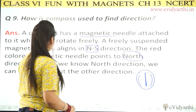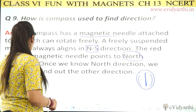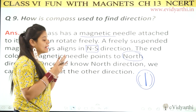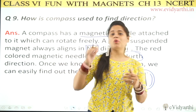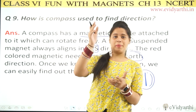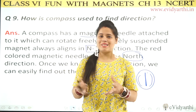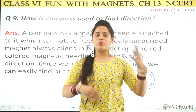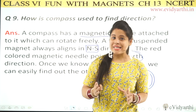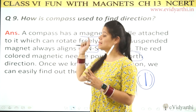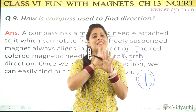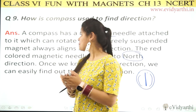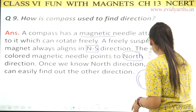Once we know the north direction, we can easily find out the other directions. If you look at north, then the opposite side is south, and then east-west. So you can find out all the other directions. This was the ninth question.